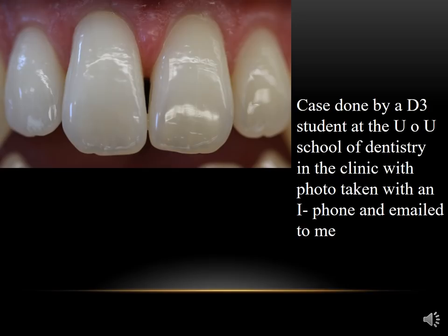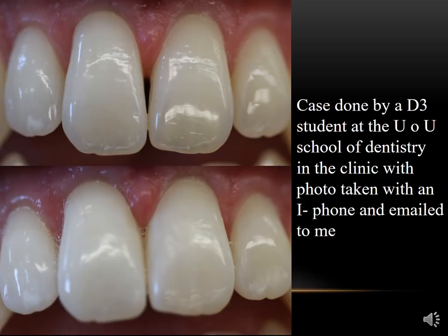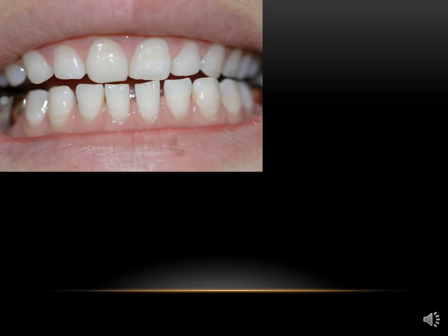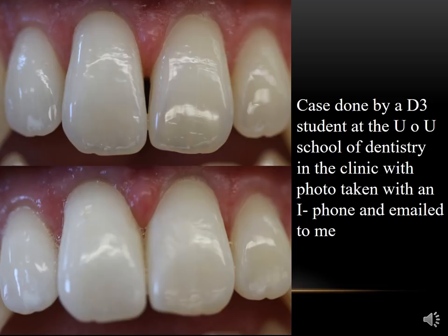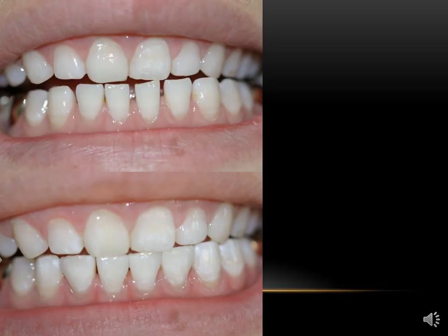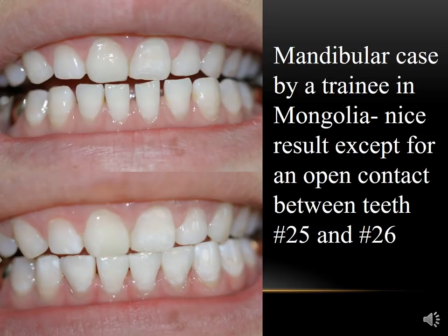Recently I received an email — a D3 student did this case, and I wasn't involved. He took a photograph on his iPhone and emailed it to me. You can see that by carefully sculpting each of these mesial surfaces, you can get a nice result. This was a case done by one of the dentists I was training in Mongolia, closing the diastemas on the mandibular anteriors, and they got a very, very nice result.